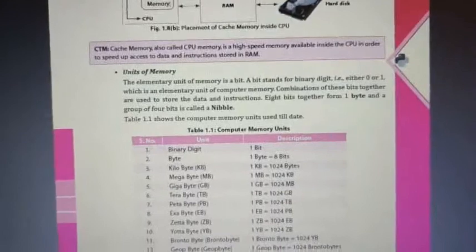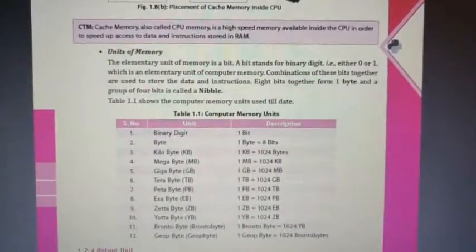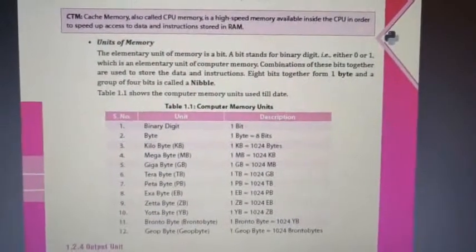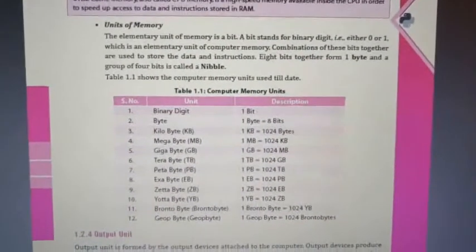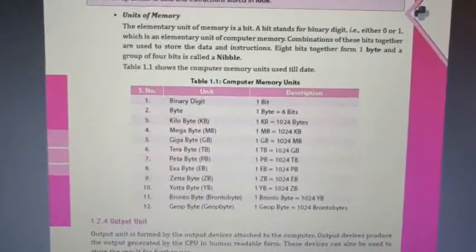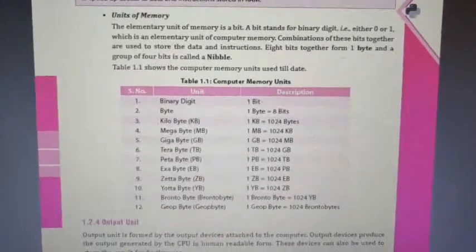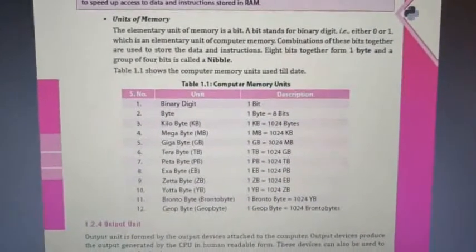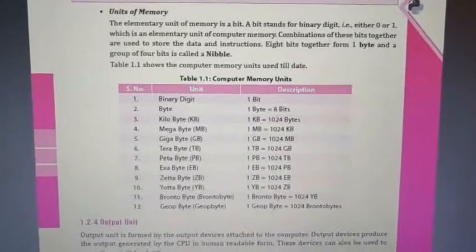Now let's talk about the units of memory. The elementary unit of memory is a bit. A bit stands for binary digit, which is 0 or 1. In 1 byte there are 8 bits. 1 KB is equal to 1024 bytes, 1 MB is equal to 1024 KB. A group of 4 bits is called a nibble. There are 12 units listed which you need to learn.